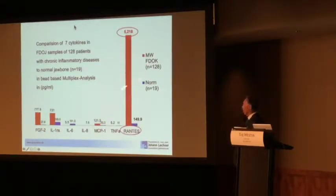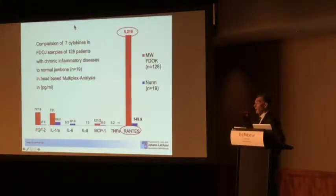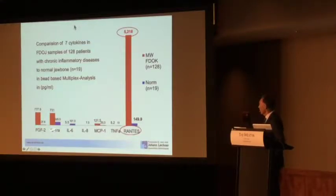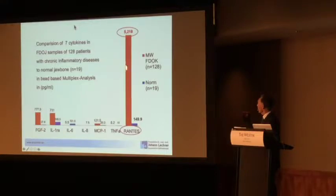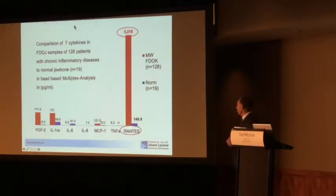We also measured 19 healthy jawbones — obtained from cores when we were setting implants. The blue columns are healthy jawbone and the red columns are the cytokines inside these fatty lump samples. We had seven cytokines, and just one came up extremely high: an overexpression of 5,218 picograms per milliliter, compared to about 150 picograms per milliliter in healthy jawbone. This is a 35-fold overexpression of a specific inflammatory cytokine called RANTES.